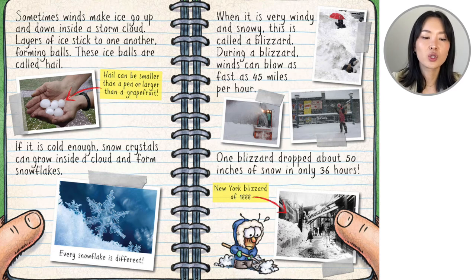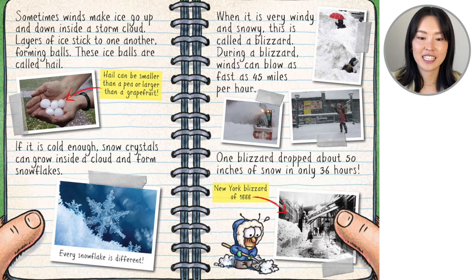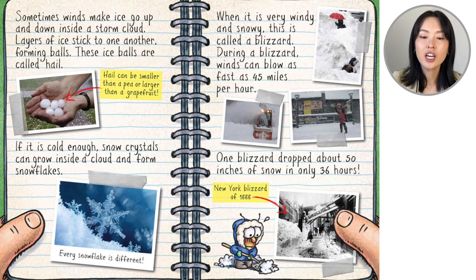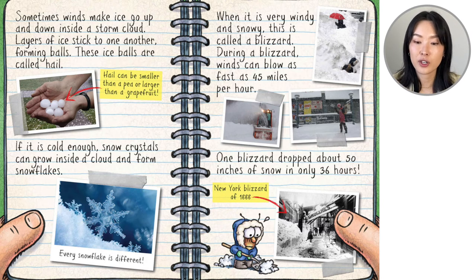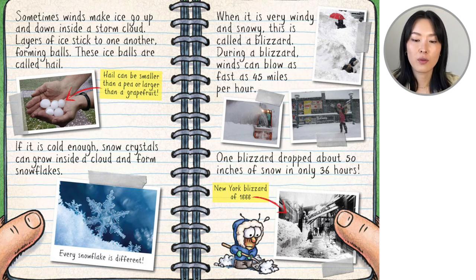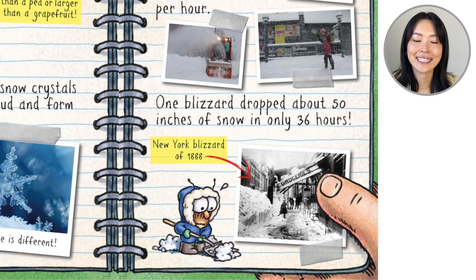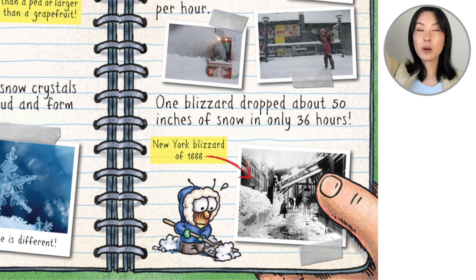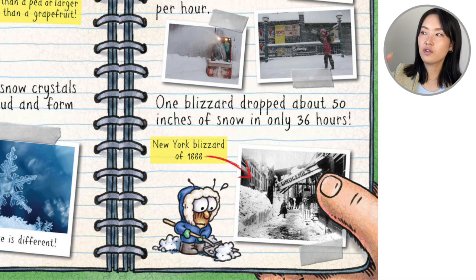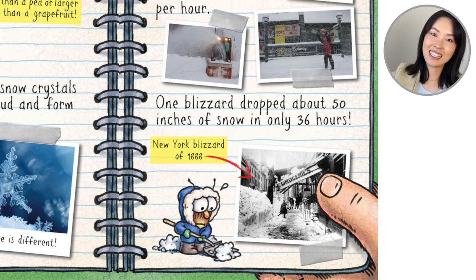If it is cold enough, snow crystals can grow inside a cloud and form snowflakes. Every snowflake is different. When it is very windy and snowy, this is called a blizzard. During a blizzard, winds can blow as fast as 45 miles per hour. Look — two people are buried and the snowplow is working hard. One blizzard dropped about 50 inches of snow in only 36 hours. Look at the New York blizzard of 1888 — 50 inches, that's probably as tall as you. In just under two days, that's how much snow fell.